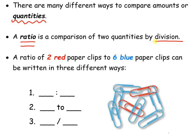There are three ways to write ratios, and I'm going to show you these ways using the picture that you just saw. We talked about there being two red paperclips and six blue paperclips in the picture. How do we write this as a ratio? We can write two colon six, two the word 'to' then six, or two slash six.